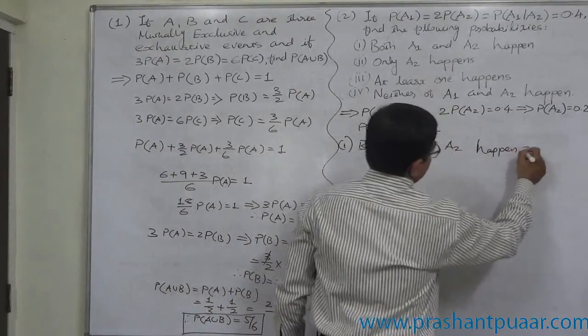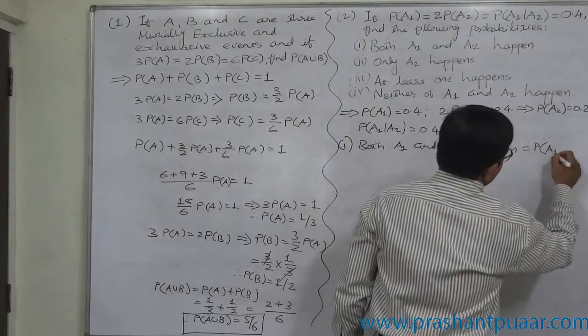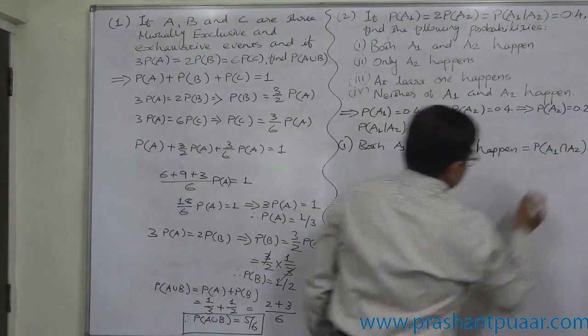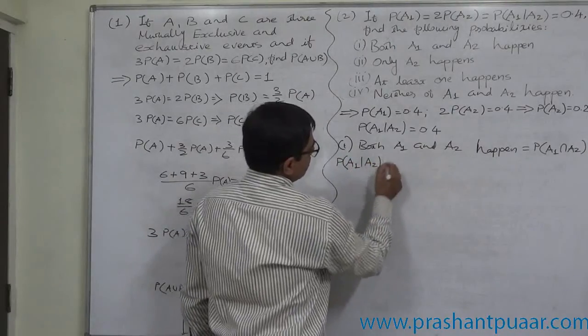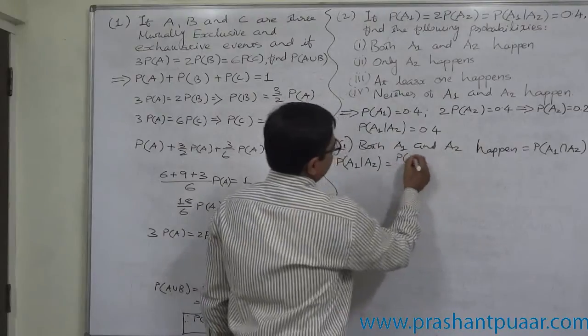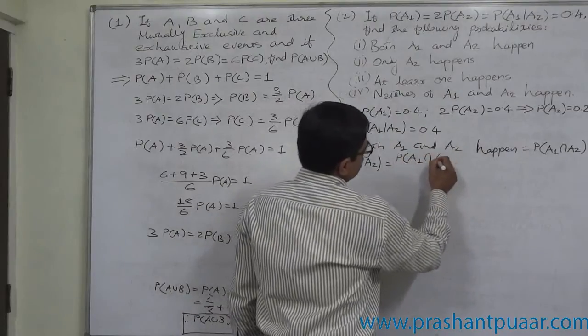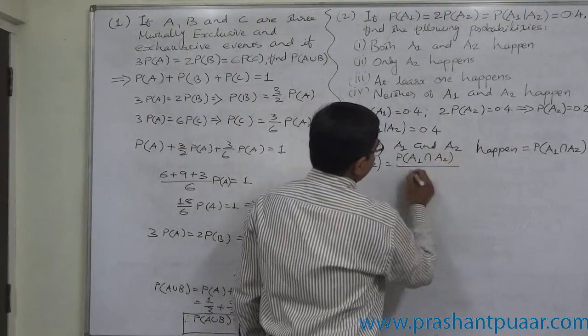That means P of A1 intersection A2. Now we know that P of A1 given A2 equals to P of A1 intersection A2 divided by P of A2.